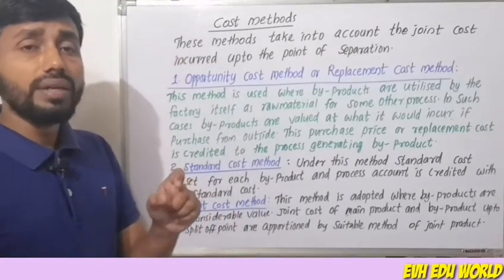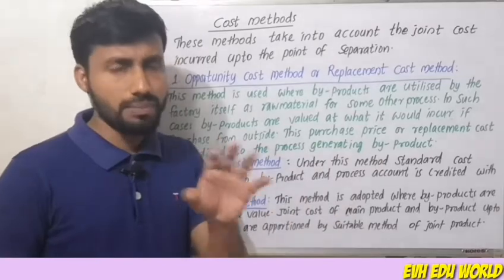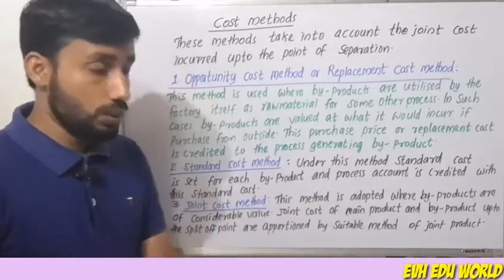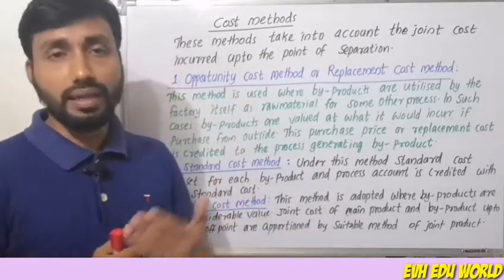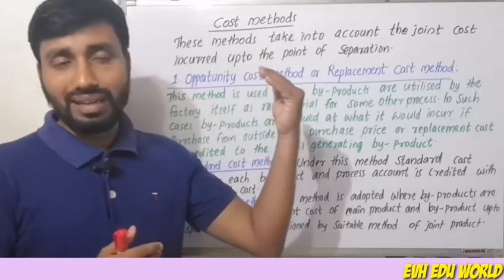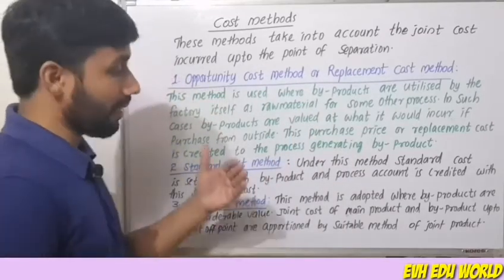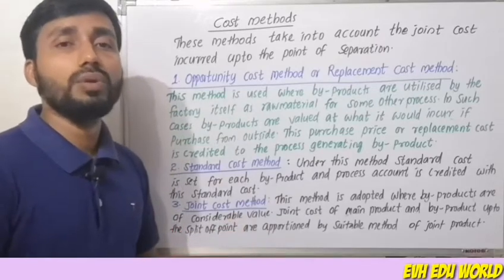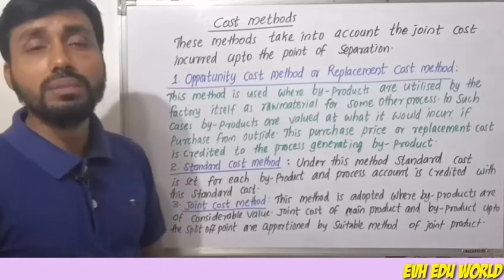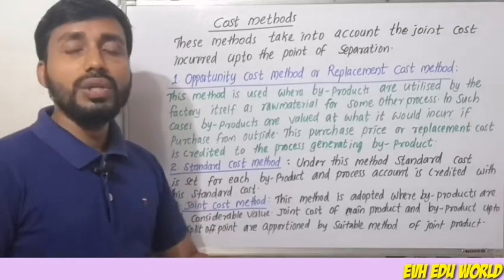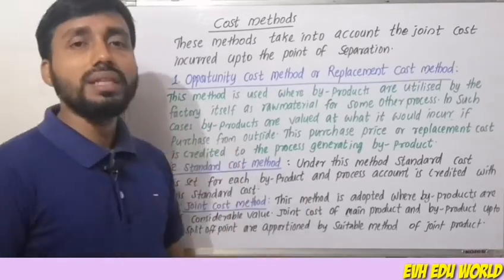Under the joint cost method, byproducts and main products are costed up to the split-off point. The joint costs up to the split-off point are apportioned between byproducts and main products.